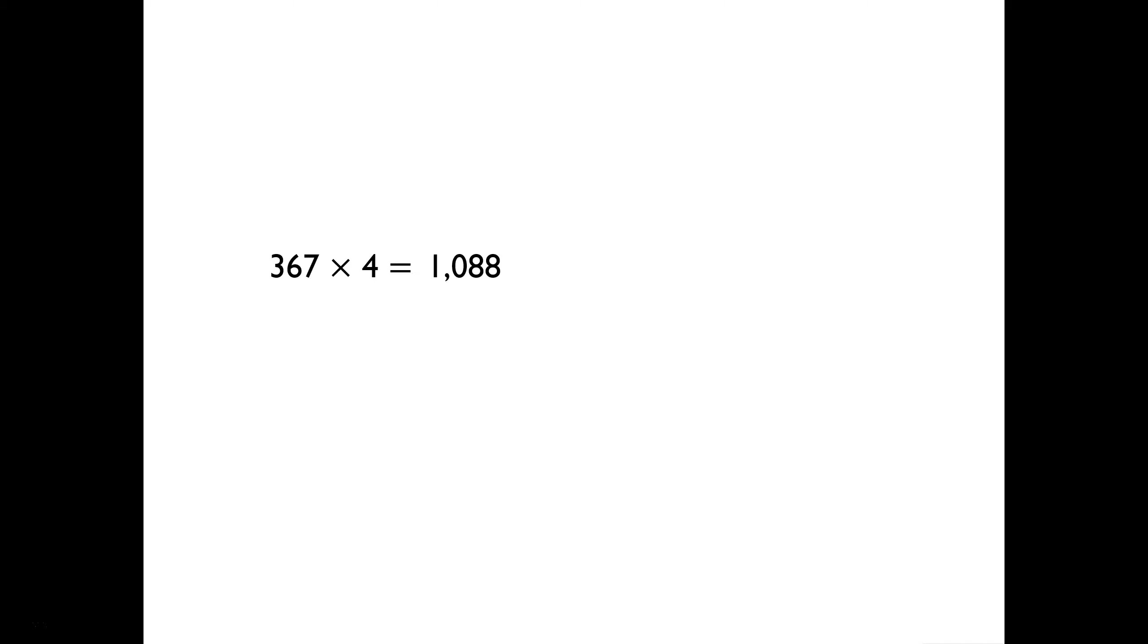What else can we do to improve our calculation accuracy? Well here we've got 367 multiplied by 4. The answer we're given is 1088. I wonder, can we check easily whether that's correct or not? This is how I know. 300 multiplied by 4 is equal to 1200. I know that the calculation 367 multiplied by 4 must be more than 1200. And if it's not, well then there's been a mistake.